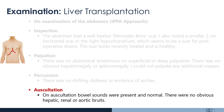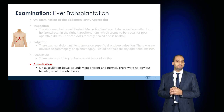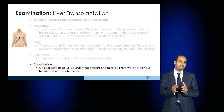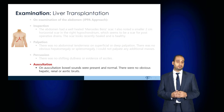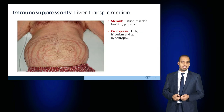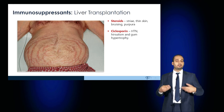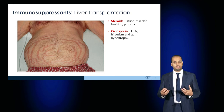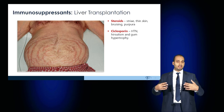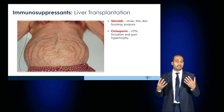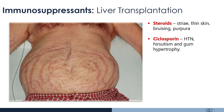A patient who's had a transplant will be on lifelong immunosuppression, so it's important to comment on the key features of those drugs. Steroids such as long-term prednisolone would result in a cushingoid appearance — the patient may appear obese, have a buffalo hump, moon-shaped face, striae on the abdomen, thin skin, bruising, and purpura.